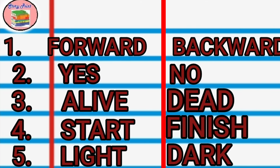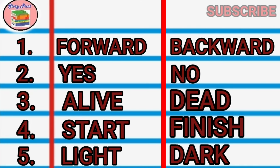First, number one: forward, backward. Number two: yes, no. Number three: alive, dead. Start, finish. Light, dark.